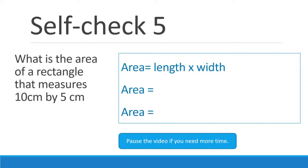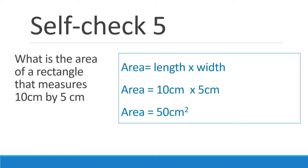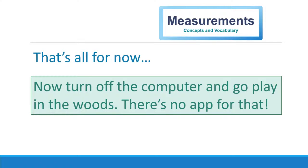And finally, the area of a rectangle that measures 10 centimeters by 5 centimeters — length times width. Pause the video if you need it. 10 centimeters by 5 centimeters is 50 centimeters squared. We've multiplied centimeters twice, so our unit is centimeters with a superscripted two. All right, that wasn't so bad. That's all I got for you right now. Please turn off your computer and go play in the woods. Talk to you later.